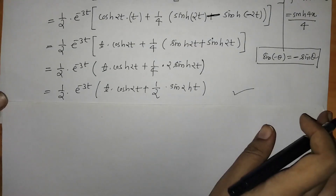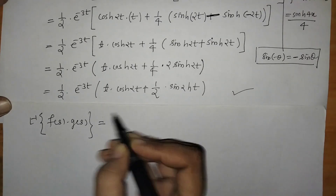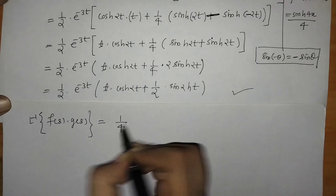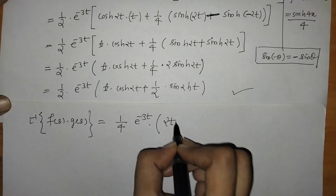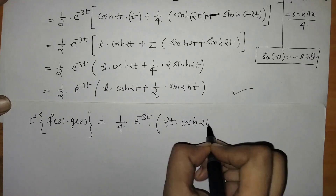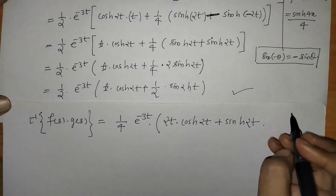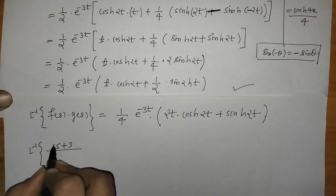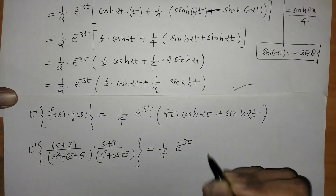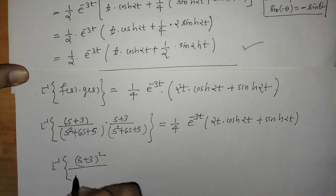On simplification, this gives 2 sinh(2t). We can further simplify: L inverse of F(s)·G(s) = (1/2)·e^{−3t}·[(1/2) into t·cosh(2t) + sinh(2t)] = (1/4)·e^{−3t}·[2t·cosh(2t) + sinh(2t)]. In this way we have found the inverse Laplace of the given function by the convolution theorem.